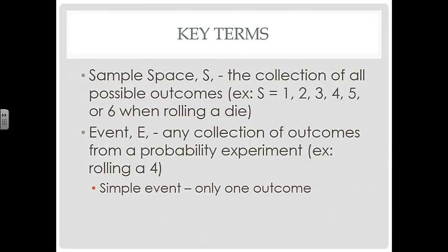An event, which again we typically denote with a capital E, is any collection of outcomes from a probability experiment. For example, if we roll a 4, that is an event. So when we roll a die, each of those outcomes is an event. And a simple event has only one outcome.